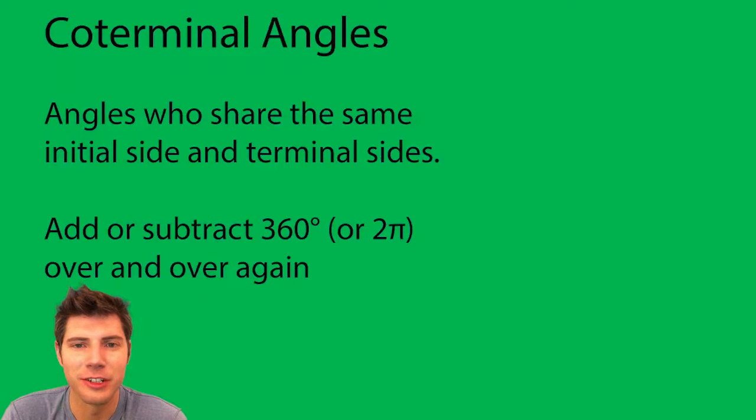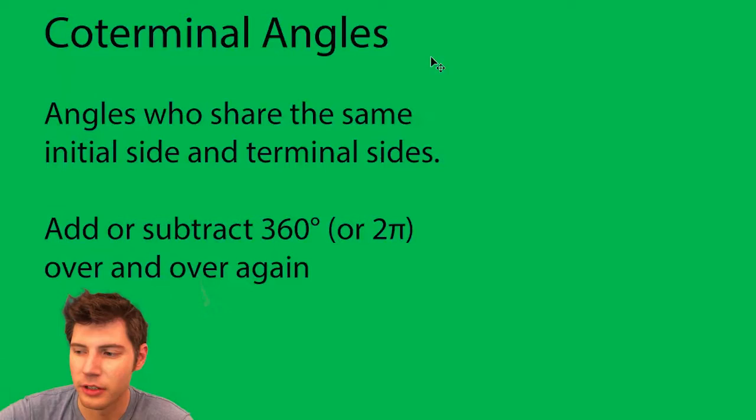Hey guys, welcome to this video. It's a notes video on coterminal angles. Coterminal angles, by definition, are angles who share the same initial side and terminal sides. Basically, you're going to add or subtract 360 degrees or 2π over and over again.